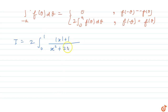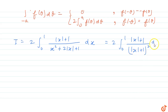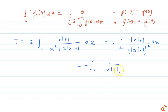This can be written as 2 times the integral from 0 to 1 of (|x| + 1) divided by (|x| + 1)² dx, since the denominator forms the (|x| + 1)² formula. This simplifies to 2 times the integral from 0 to 1 of 1/(|x| + 1) dx.